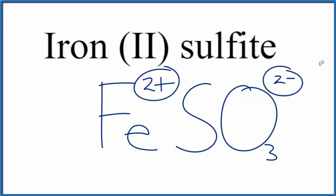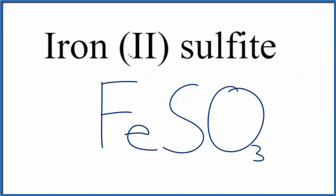Two plus, two minus, that equals zero. So this is the formula for iron(II) sulfite, FeSO3.